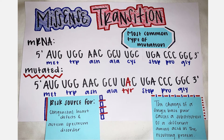Missense mutations are the most common type of point mutations. These mutations involve the change of a single base pair, causing the substitution of a different amino acid in the resulting protein. As you can see, when a transition takes place in one letter of the codon, the mutated codon will code for a different amino acid. This mutation is a transition because it is exchanging purine guanine for purine adenine.